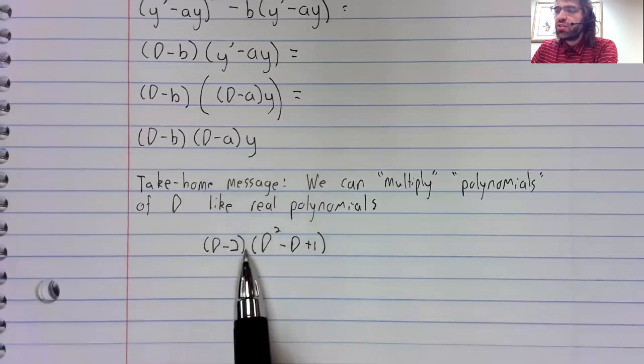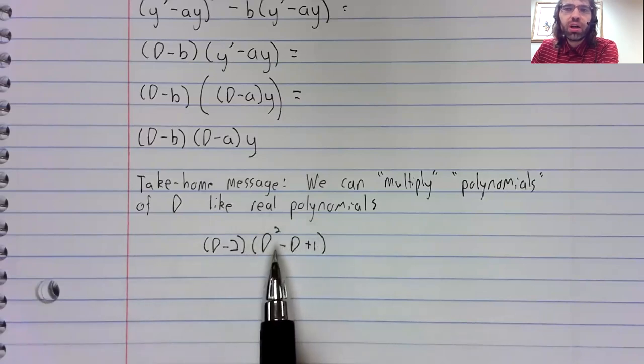So say we have d minus 2 applied to d squared minus d plus 1. This isn't multiplication, it's composition. This isn't a polynomial.